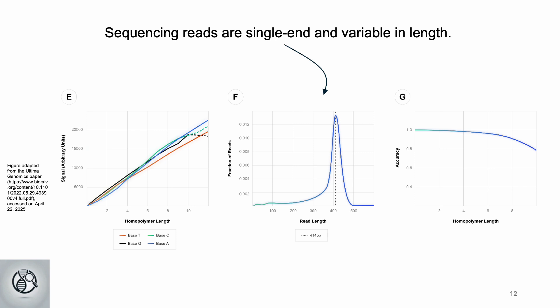Another key difference is that Ultima produces variable length single-end reads, unlike Illumina's fixed-length paired-end reads. For example, instead of paired 150 base-pair reads, Ultima generates single 300 base-pair reads.